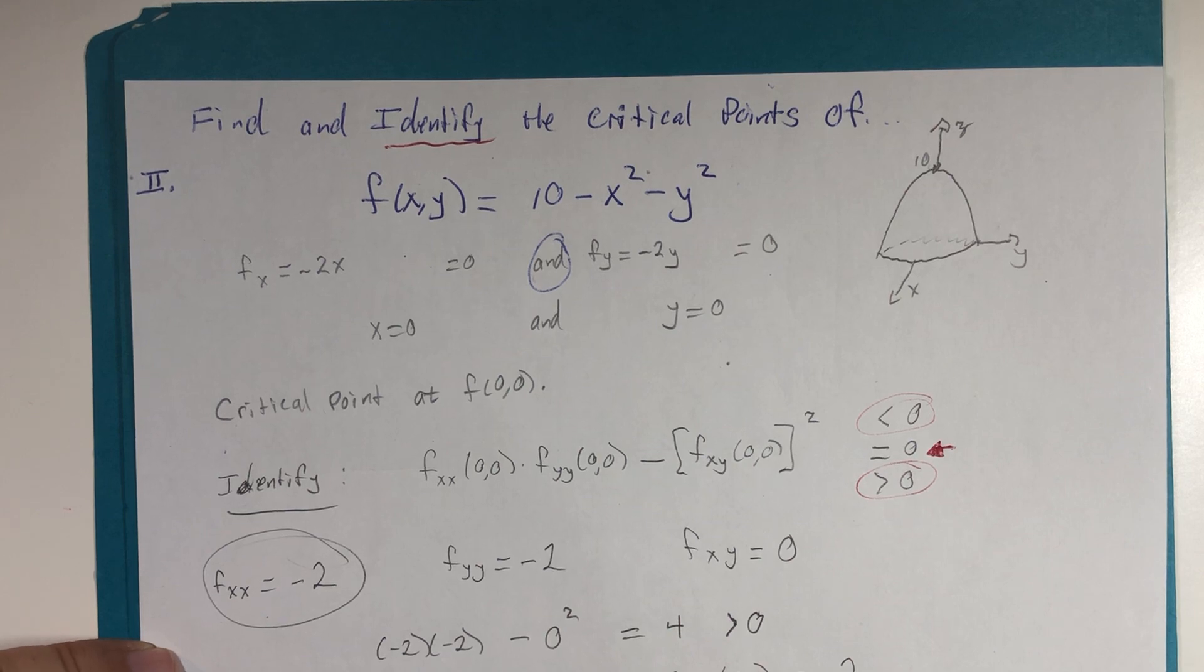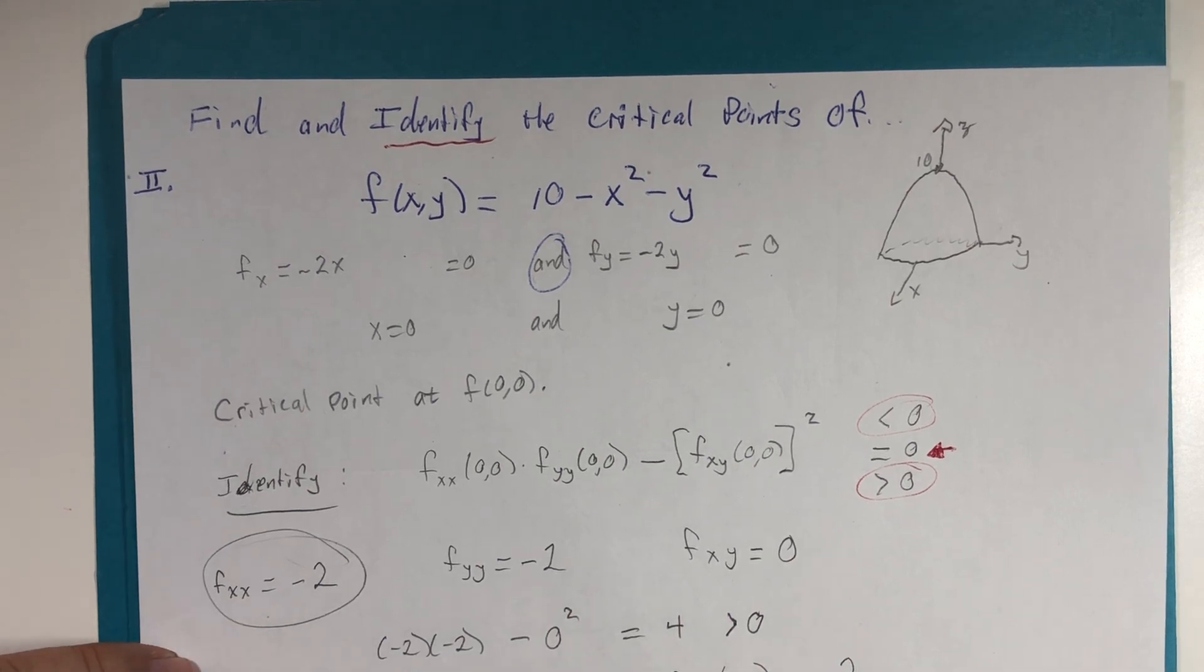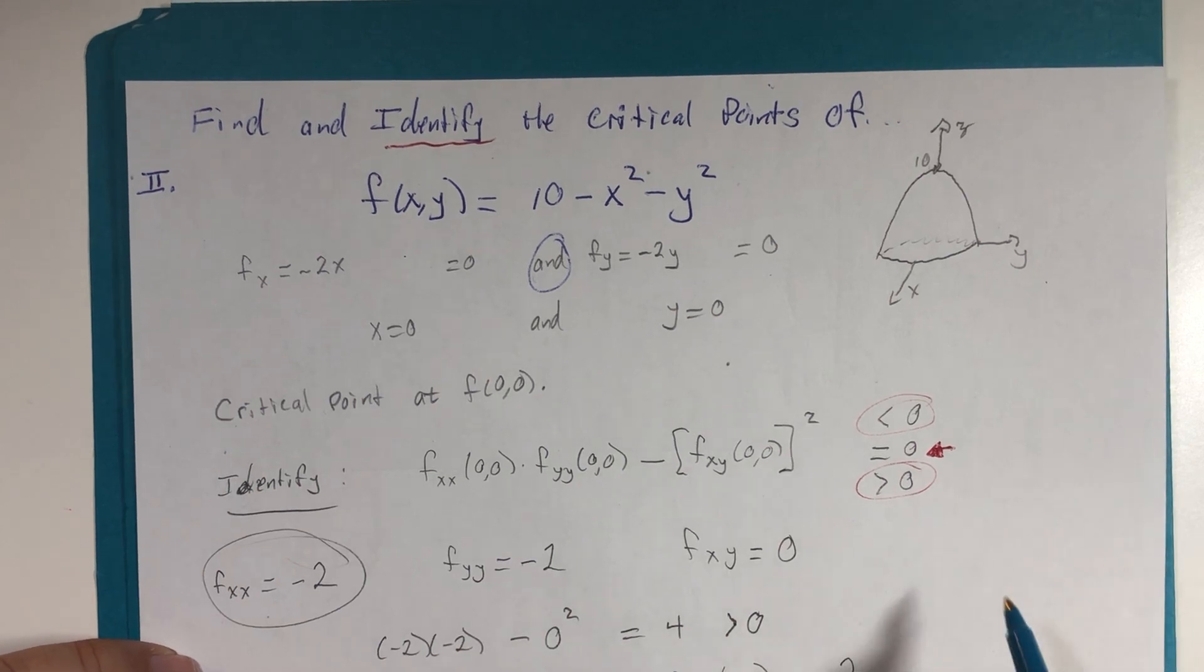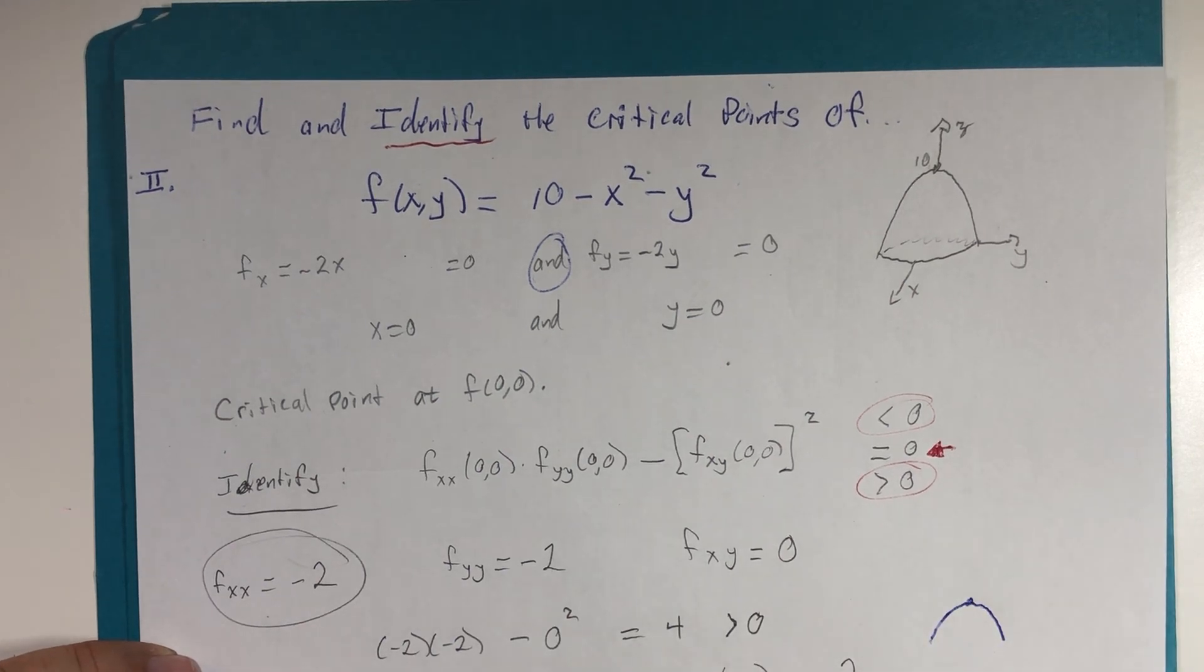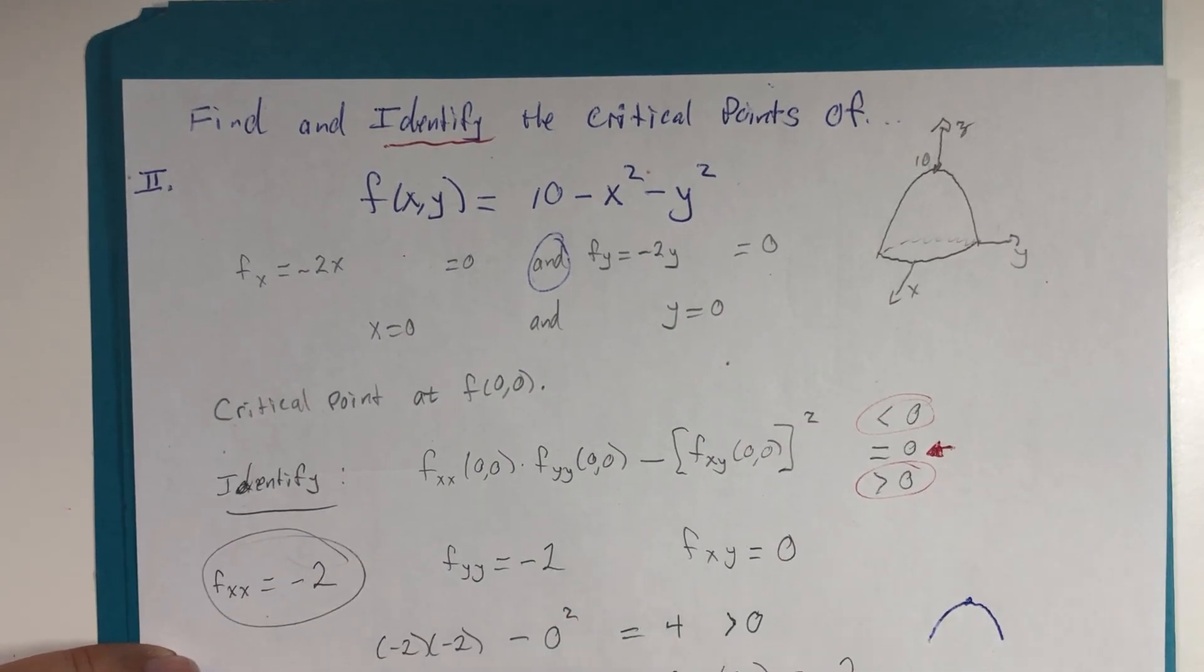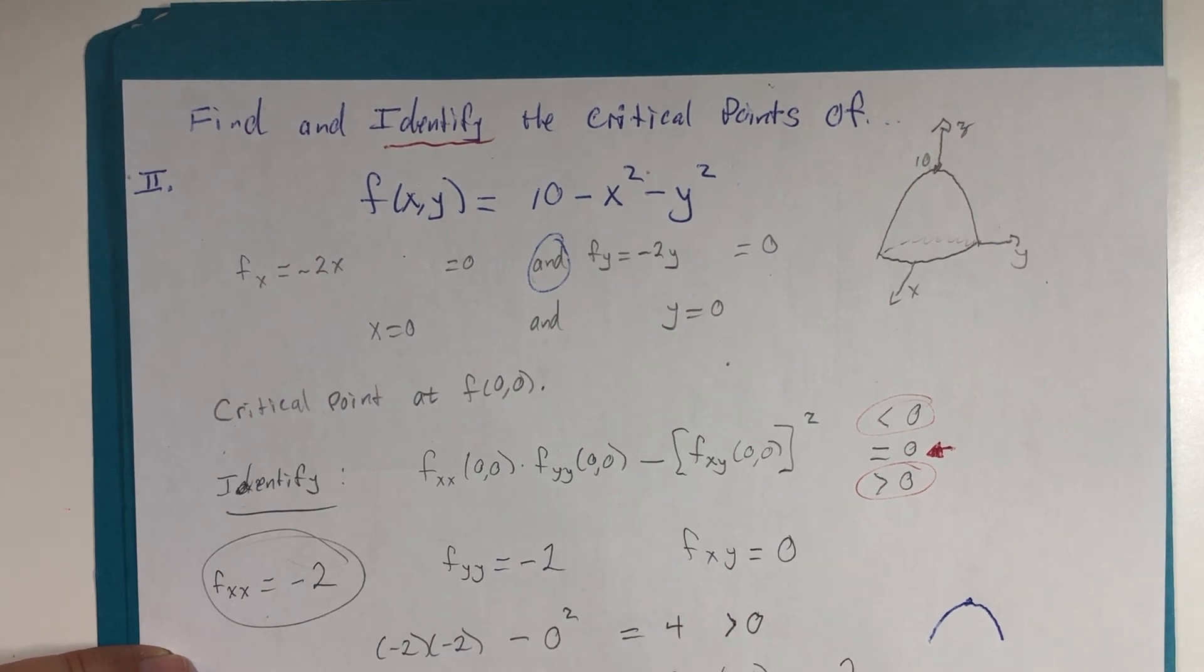Now I want you to think back to Calc 1. If the second derivative is similar to concavity and the concavity is negative, that meant the curve was bent downwards and that always meant we were at a maximum point. And that's exactly what this test tells us, that f of 0, 0 is where we have a local maximum. And you can also call it a relative maximum.